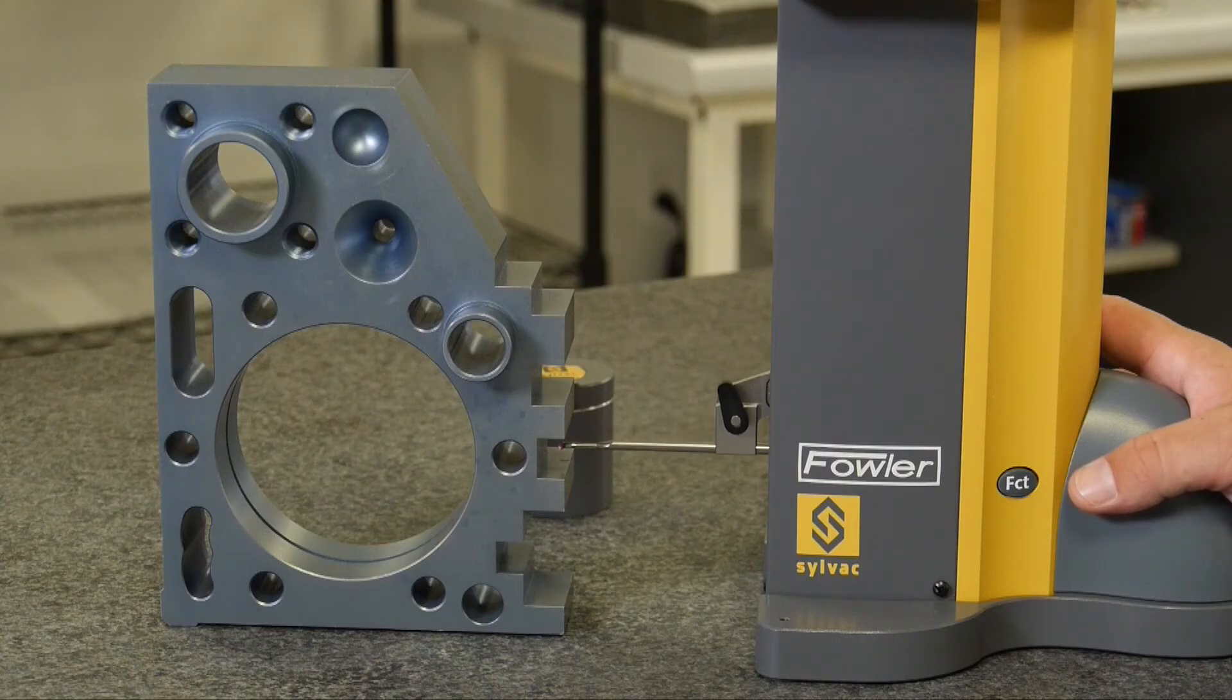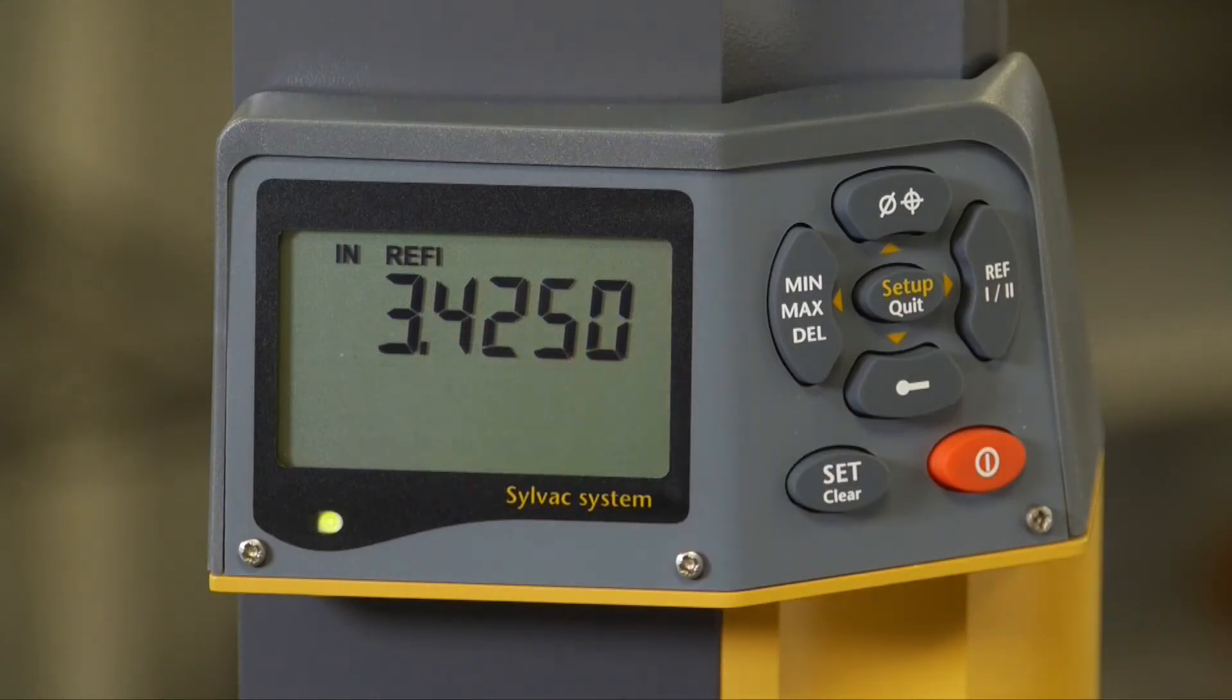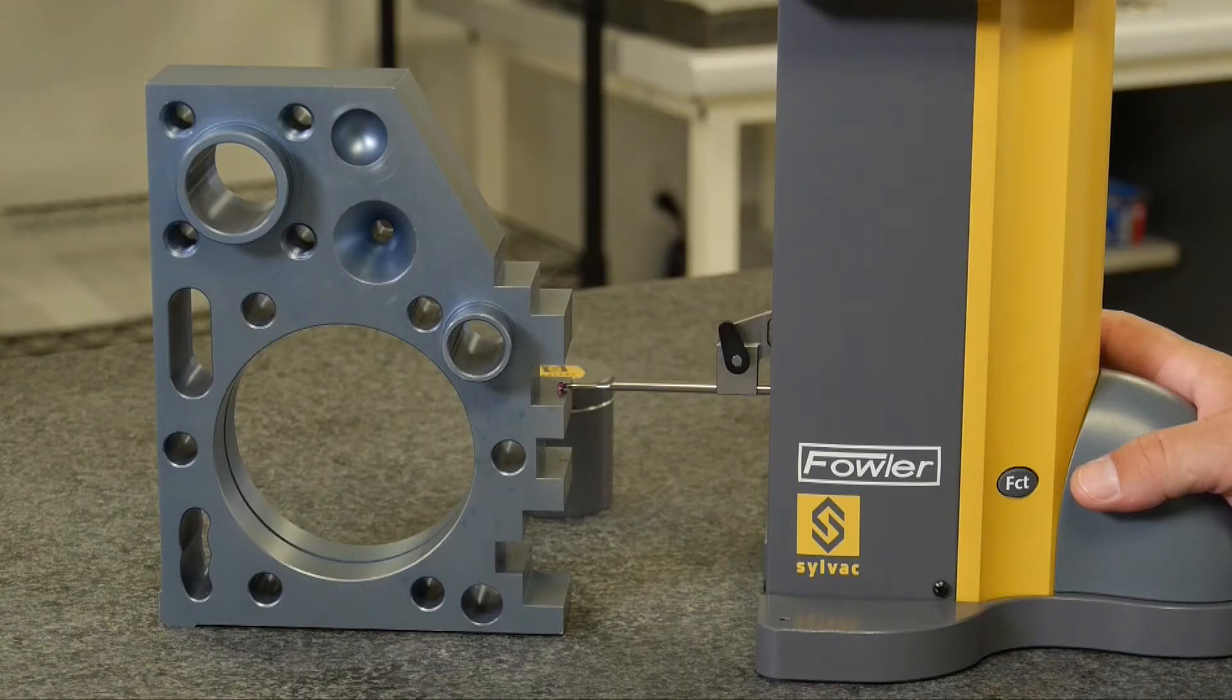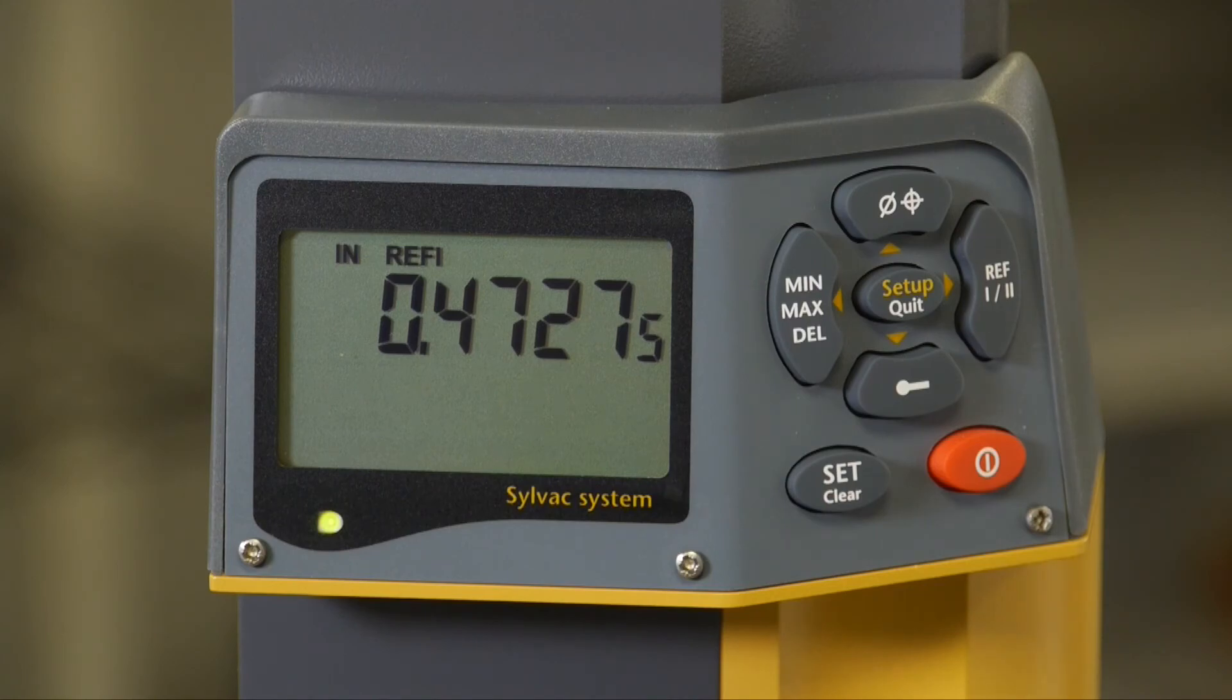Just to show you one more time, if I drive up and land on the surface, I'm always getting a distance from my surface to my reference position, 3.425 inches. My function button will give me the difference between the two last contacts, from my previous to my current contact, it's 472 thousandths.